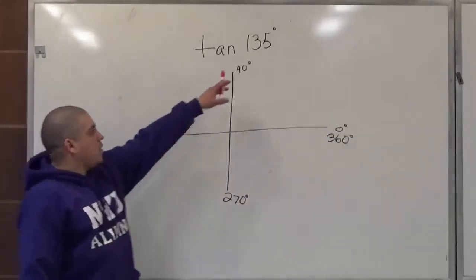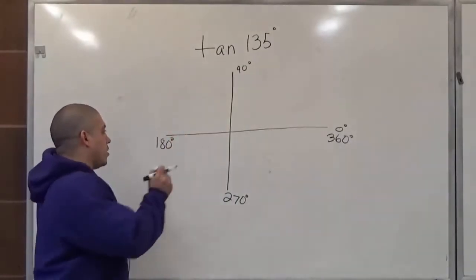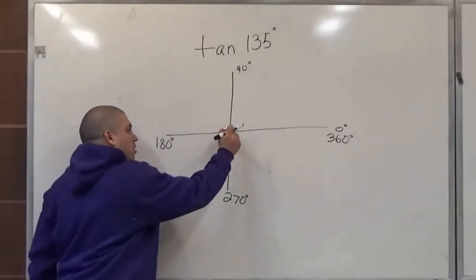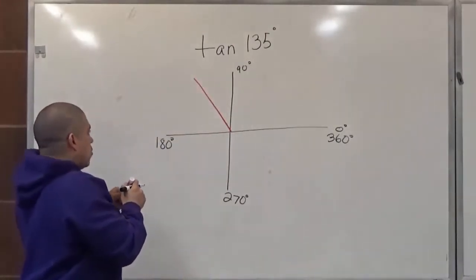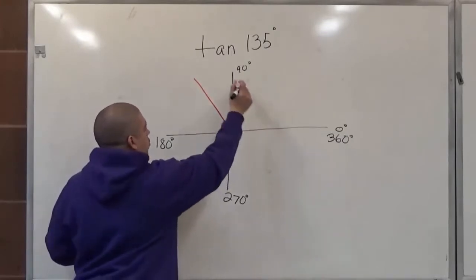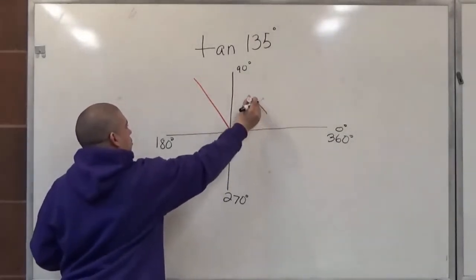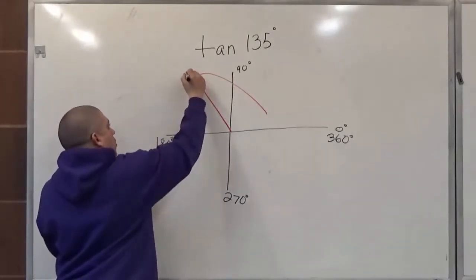So 135 degrees is located somewhere between 90 and 180 degrees. So I'm going to say this, right, so from here to here it's going to be 135 degrees.